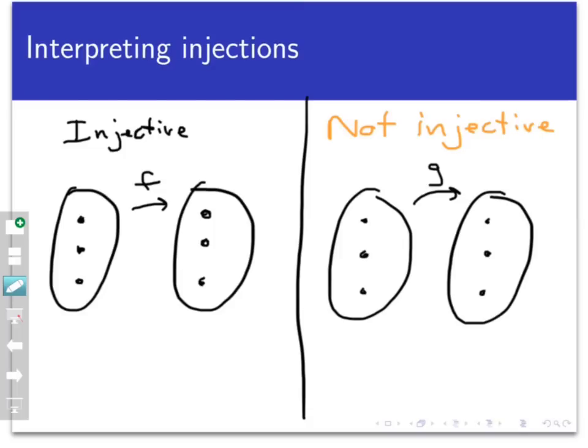Schematically, an injective function would look like this. Since f is a function, there is no splitting. So every point in the domain maps to one point in the codomain. But since f is an injection, no two points in the domain map to the same point in the codomain.